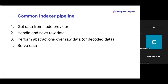Moving to the next slide: common index pipelines. Platforms that work with blockchain data have a similar ETL process. First, node providers transmit data to the indexer. Then the indexer handles raw data and performs abstractions — because on the EVM, for example, everything is stored in bytecode, and it's not trivial to understand whether a specific contract is an ERC-20 or an NFT contract. Finally, the data is served — either as raw JSON via an API, or with different visualizations in an analytical tool.